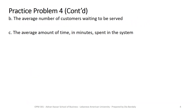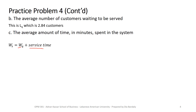The average number of customers waiting to be served is LQ, which we already found as 2.844 when computing LS. For the average time spent in the system in minutes, WS, we first find WQ = LQ / lambda, then multiply by 60 to convert to minutes, since service time is in minutes. Then WS = WQ + service time.